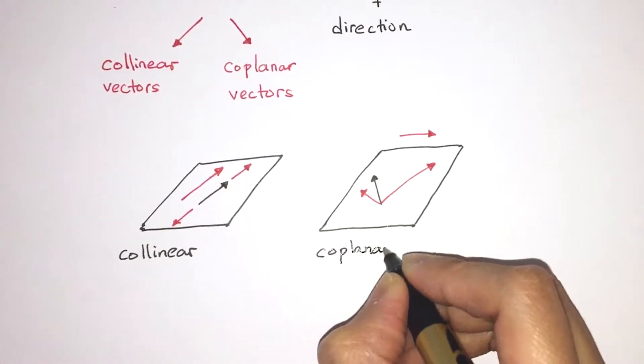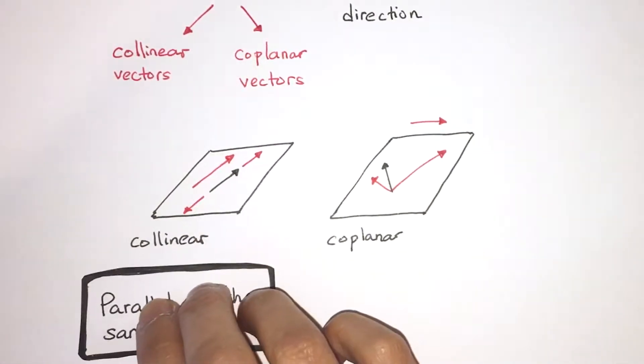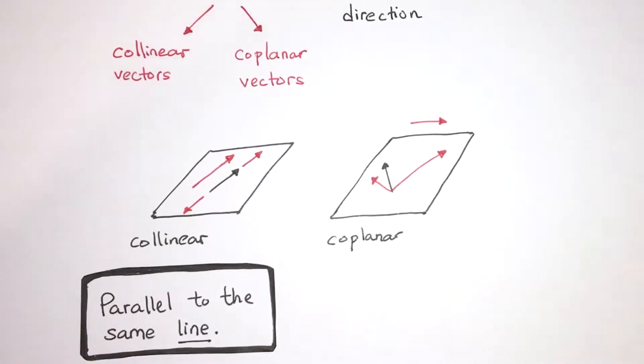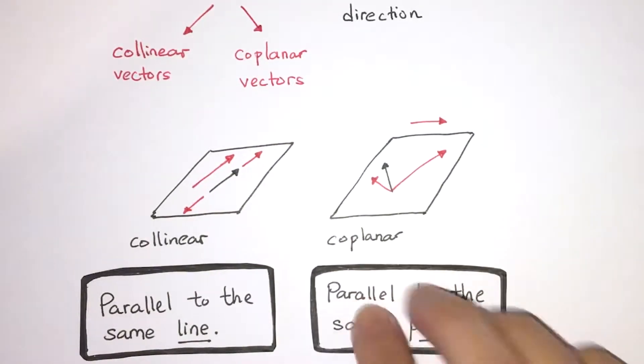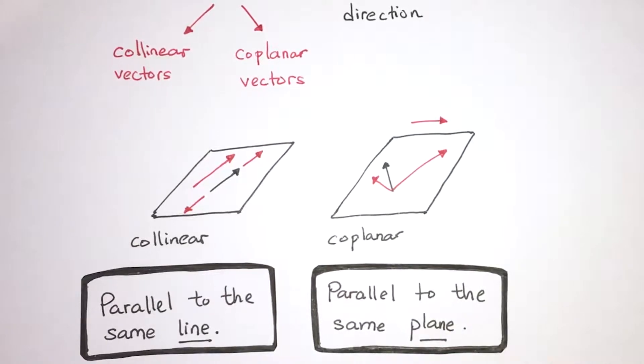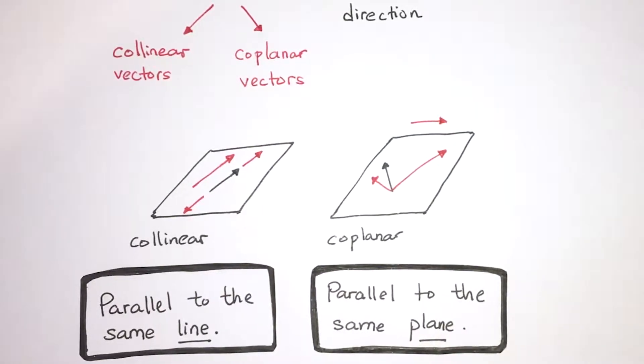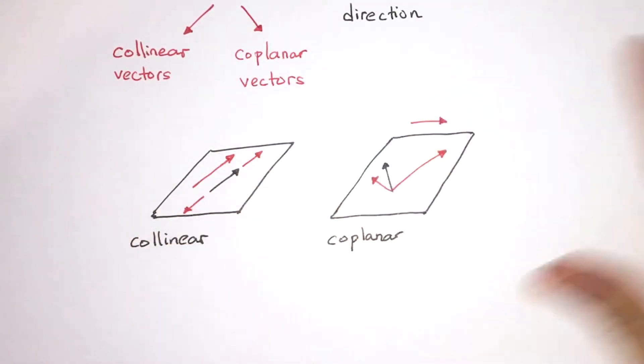So when vectors are parallel to the same line, they're considered collinear. And if they're parallel to the same plane only, they're considered coplanar. And you can also see that, by default, all collinear vectors are also coplanar.